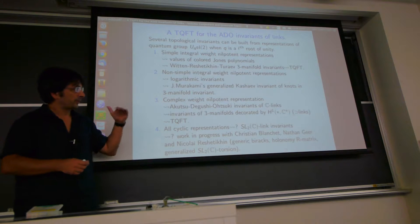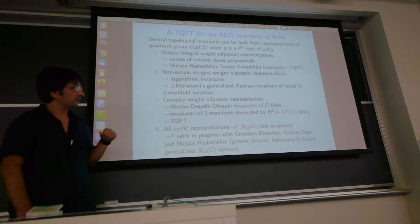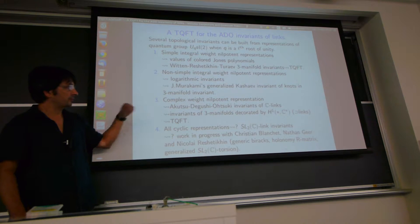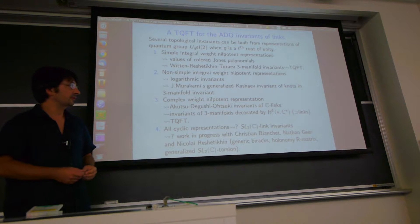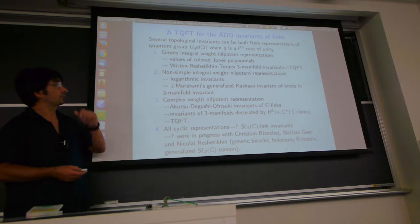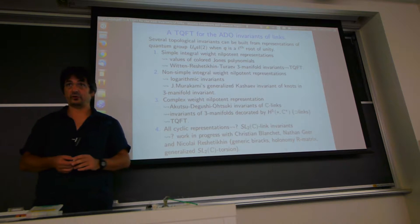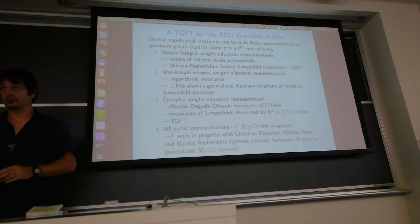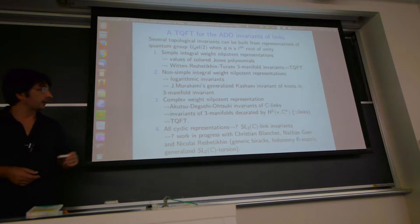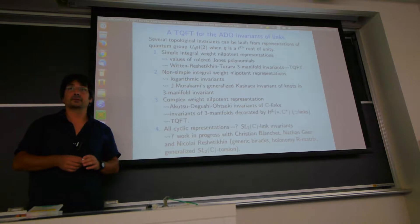What I will explain in this talk is how you can construct a 3-manifold invariant from these link invariants, in a similar way that you construct the Witten-Reshetikhin-Turaev invariant of 3-manifolds from the colored Jones polynomial, and how you can derive a TQFT from it.